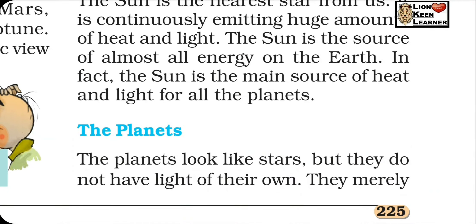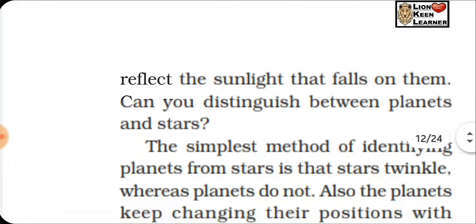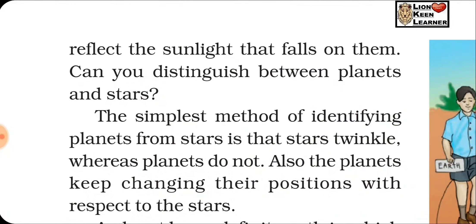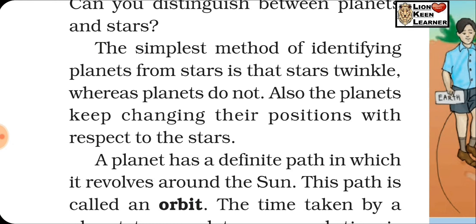Planets look like stars but they do not have light of their own. They merely reflect the sunlight that falls on them. Can you distinguish between planets and stars? Yes — the simplest method is that stars twinkle whereas planets do not. Also, planets keep changing their positions with respect to the stars.